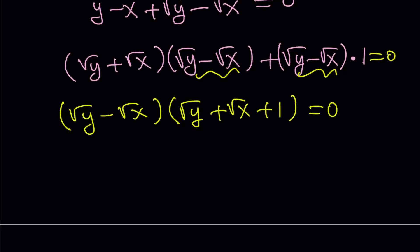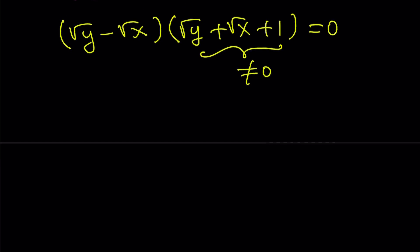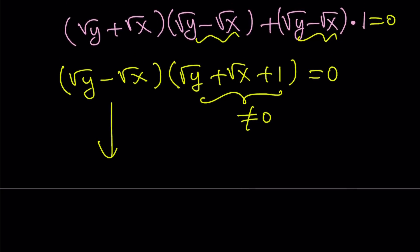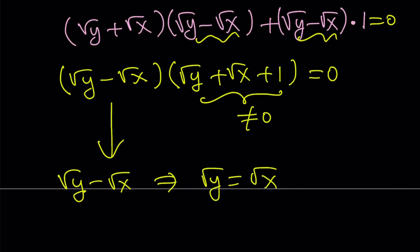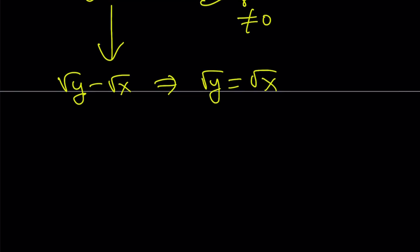We have a product, and each factor can equal 0. But the second factor — square root of y plus square root of x plus 1 — cannot equal 0 in the real world, because square root of y and square root of x are both greater or equal to 0, and adding 1 means you'll never get 0. So this implies square root of y minus square root of x equals 0, which implies square root of y equals square root of x, and since x and y are well defined, this implies y equals x.